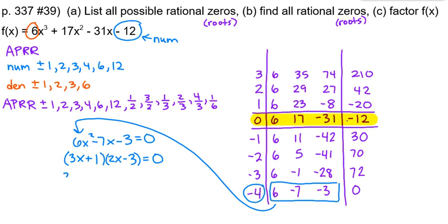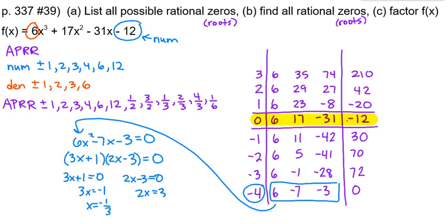Set each factor equal to zero and solve each one. We get x equals negative 1/3 from the first factor, and from the other factor, set it equal to zero, solve for x, and we get x equals 3/2.